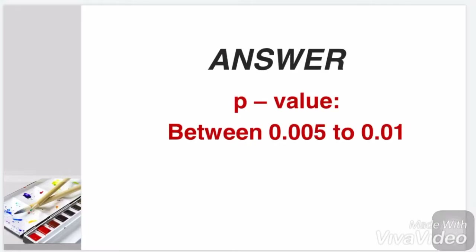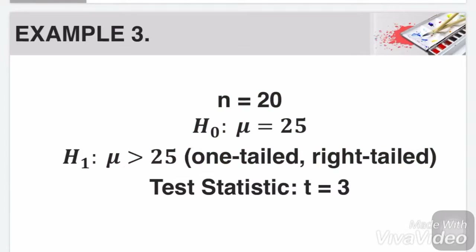The answer is, p-value is between 0.005 to 0.01.